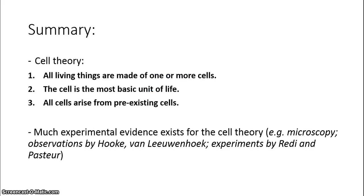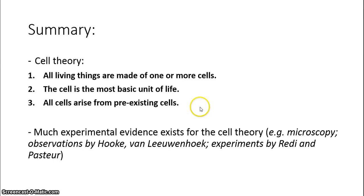In summary, the cell theory states that all living things are made of one or more cells, that the cell is the most basic unit of structure, function, and organization, and that all cells are made from pre-existing ones. There is a lot of experimental evidence for the cell theory, including simple observations by Hooke and van Leeuwenhoek, as well as experimental evidence from the experiments of Francesco Redi and Louis Pasteur.